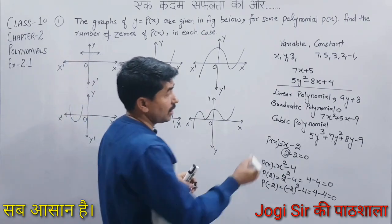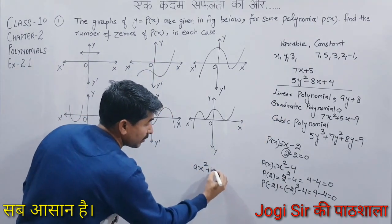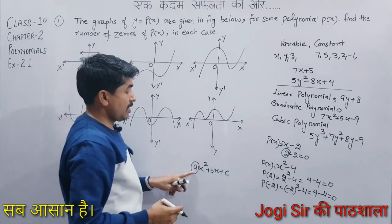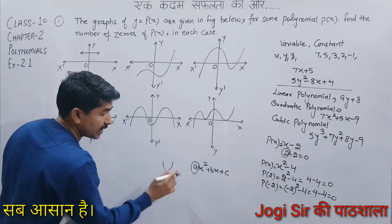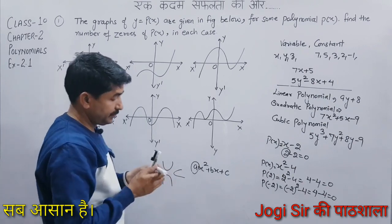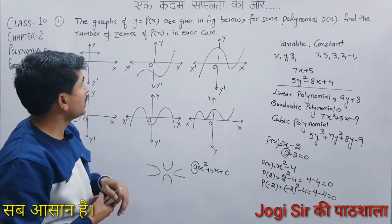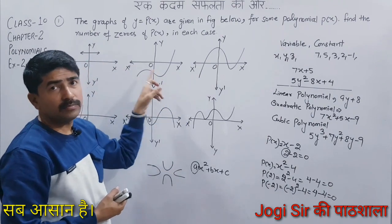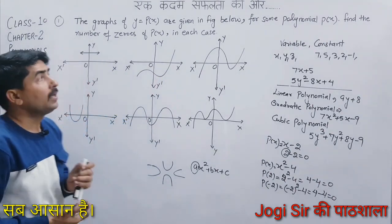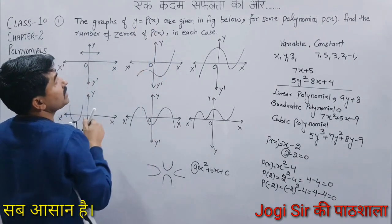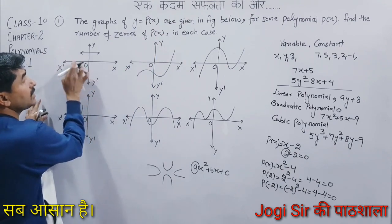For the standard quadratic polynomial ax squared plus bx plus c, the direction of the parabola depends on whether a is greater than 0 or less than 0 — it will be upward or downward. This parabola shape has been asked many times in exams. Look at this graph — this is the x-axis and this is the y-axis. The polynomial px is in the variable x, so you only need to check the x-axis.